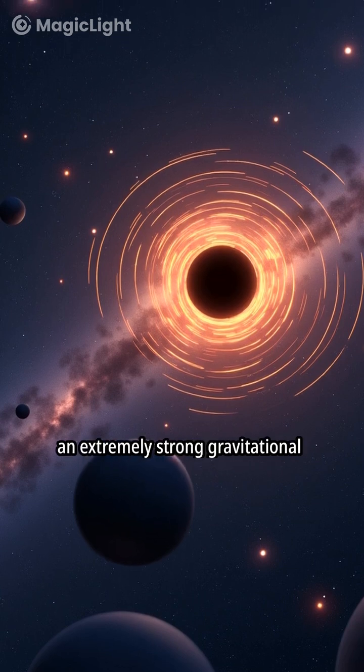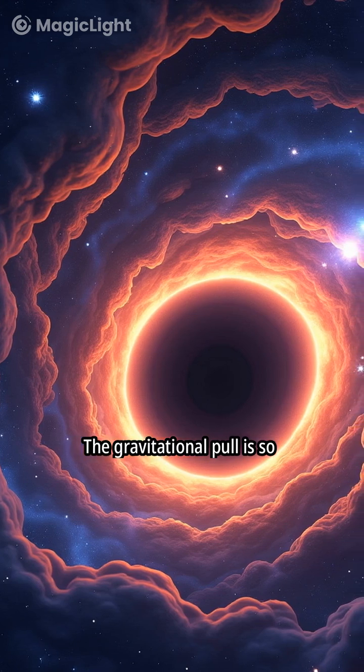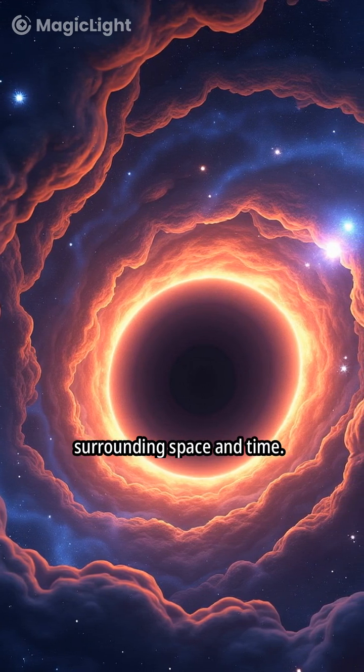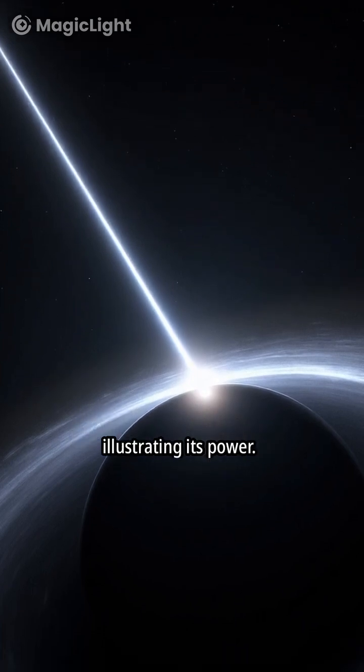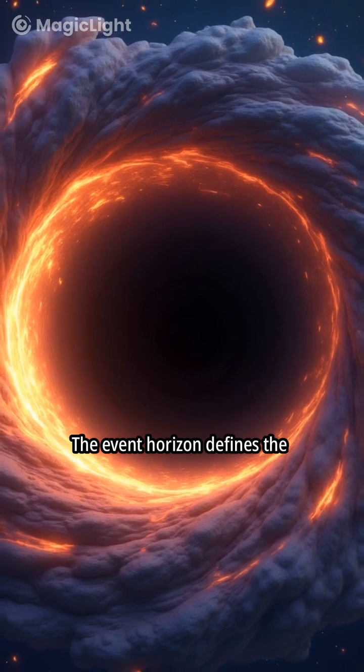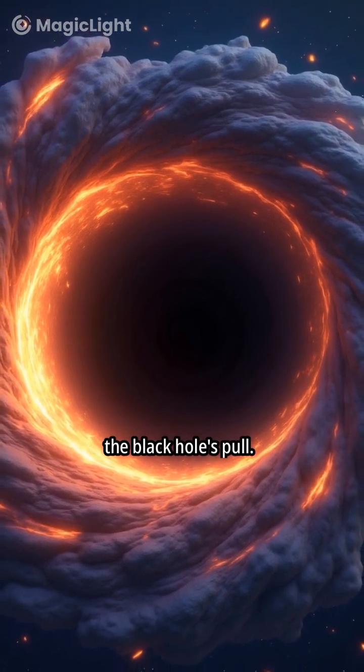This compression results in an extremely strong gravitational field. The gravitational pull is so intense that it warps the surrounding space and time. Light bends dramatically as it passes near the black hole, illustrating its power. The event horizon defines the boundary beyond which nothing, not even light, can escape the black hole's pull.